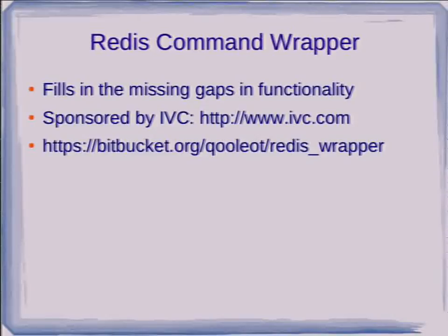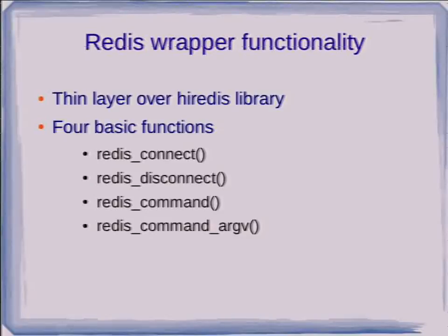What we've done is wrapped the HiRedis library — also used in the foreign data wrapper — in some Postgres functions. This work was sponsored by IVC, the creators of the ad server, and is available on their Bitbucket repo. It basically has four functions: Redis Connect, Redis Disconnect, Redis Command, and Redis CommandArgV. The Redis foreign data wrapper makes a new connection for every SELECT and doesn't keep persistent connections around, but this library is really designed for much lower-level operations.